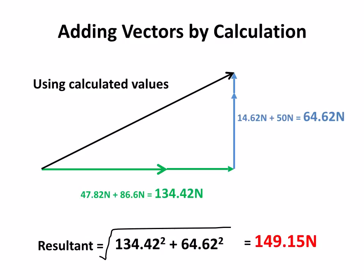And now we're going to use Pythagoras to find this hypotenuse. So we square the horizontal, we square the vertical, add them together, take the square root, and we get 149.15.